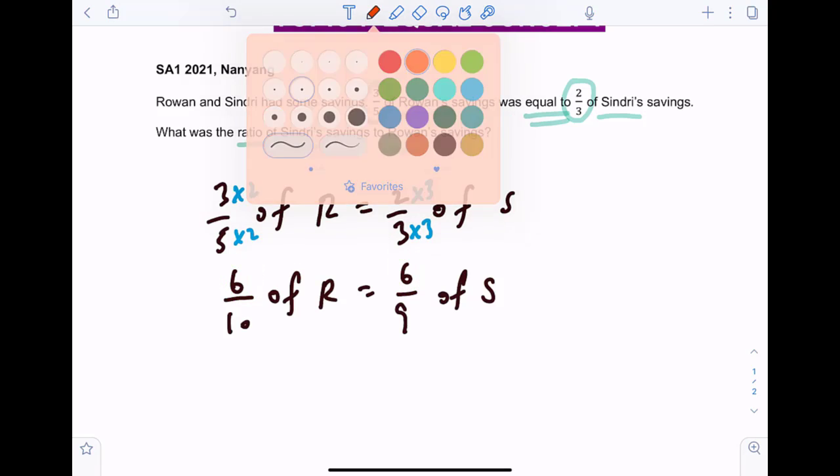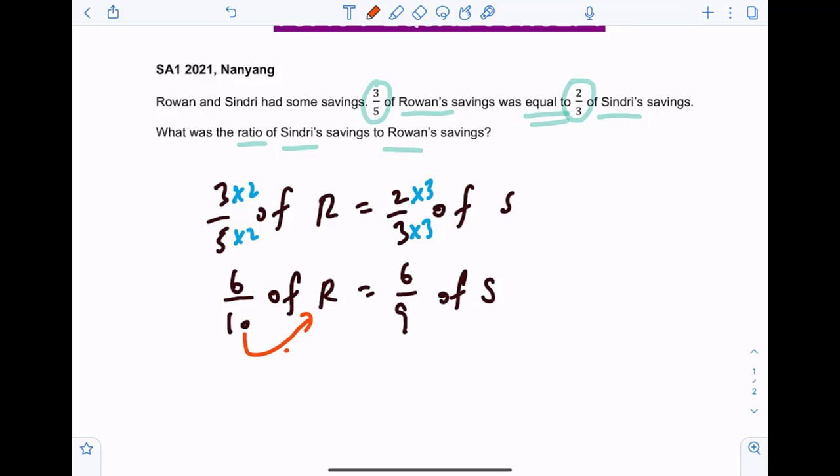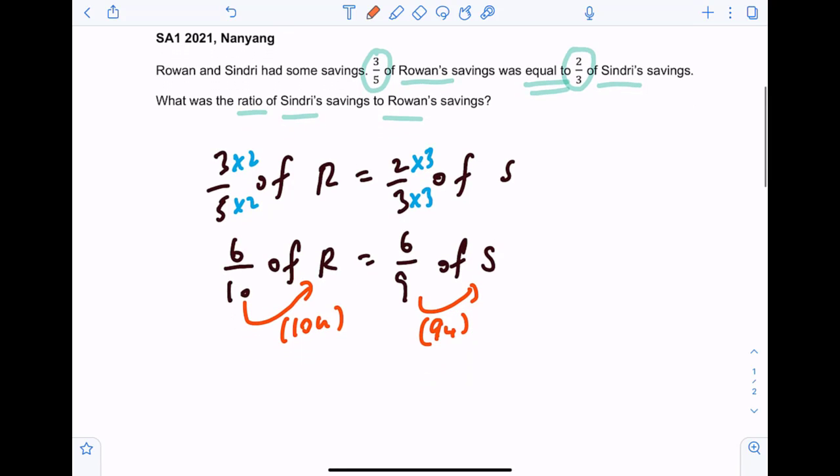The new denominator will be the total for Rowan and for Sindri respectively. So Rowan has ten units of savings. Sindri has nine units of savings. So what is the ratio of S to R? There will be nine is to ten. That's the final answer for this question.